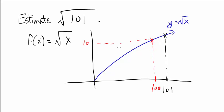So how can we use this 10 to estimate the square root of 101? Well, if you look at this, we can let this distance be delta y. Such that square root of 101 is our value of square root of 100 plus delta y or 10 plus delta y.